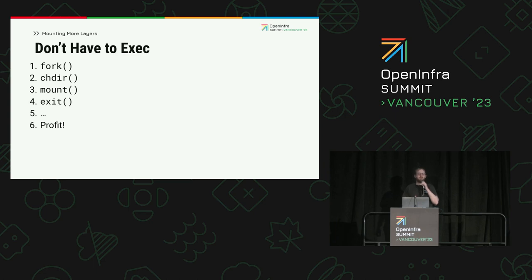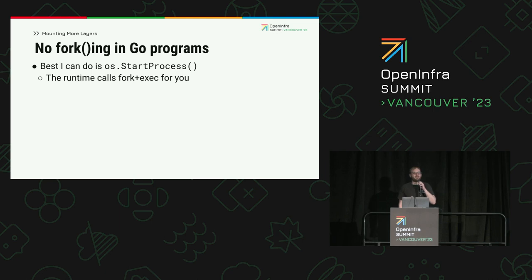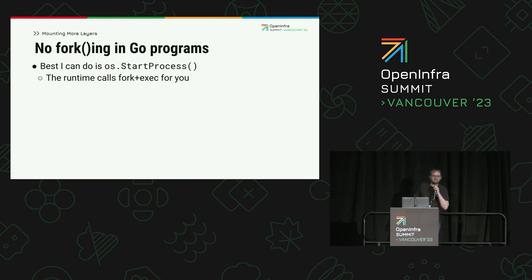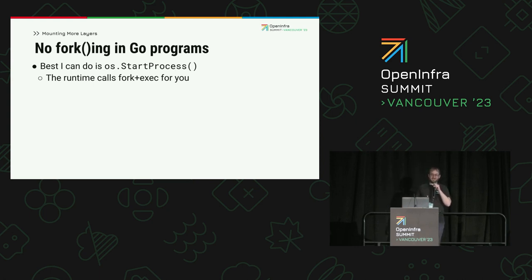The child process doesn't have to exec — it could keep running the same program as the parent until it exits. So that's one possible solution: fork a child process whose only job is to change directory, mount, and exit. Unfortunately, Docker daemon is written in Go and fork without exec is not supported in Go programs. You could invoke the raw syscall, but the child process would be in a very sad state. The child will inherit copies of all the mutexes in the parent but start with just one thread. None of the garbage collector threads will be running, and the child will likely deadlock rather quickly. Unless you are the Go runtime, or willing to tie yourself to implementation details of a particular runtime, write code in an extremely limited dialect of Go, and pray that toolchain updates won't break you, you cannot fork in Go programs without also execing.